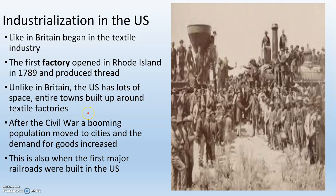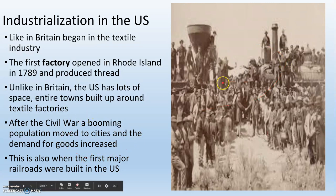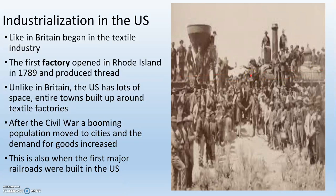After the Civil War, a booming population moved to cities and demands for goods increased — similar to what had happened with the Agricultural Revolution. This is also when the first major railroads were built in the U.S. This picture shows where the Transcontinental Railroad actually met. This was a railroad that could take someone all the way from the East Coast to the West Coast. They didn't just start building from one side — they started from both sides and met in the middle, right here.